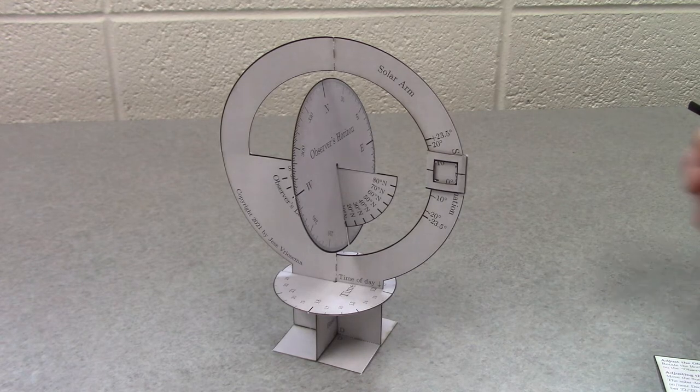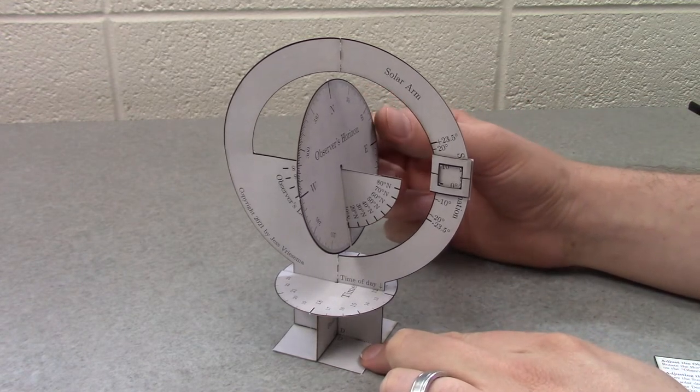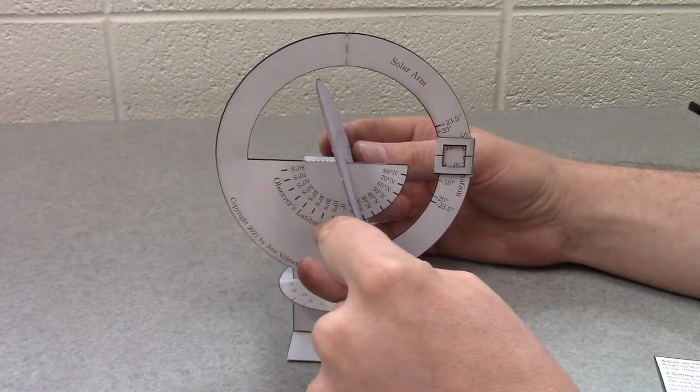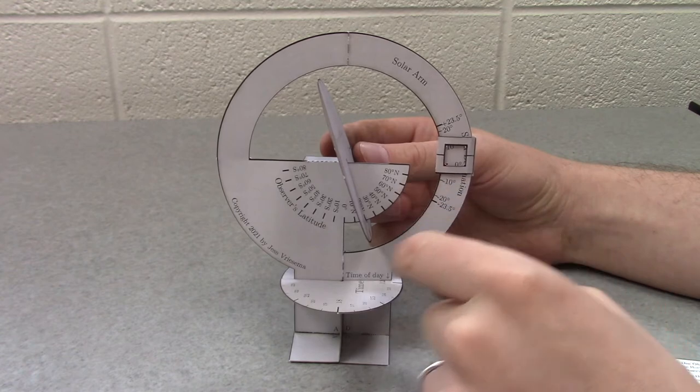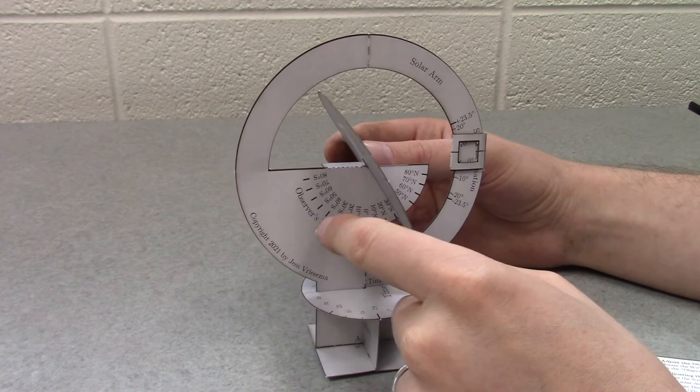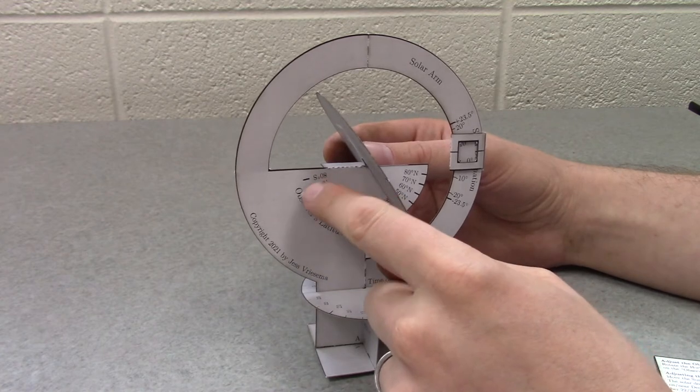There are many things that you can adjust. One of them is the observer's latitude. The observer's latitude is indicated on here by numerous different angles such as 80 degrees north, zero degrees, i.e. the equator, 80 degrees south.